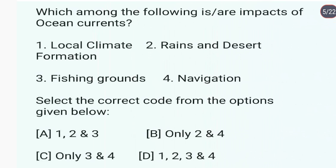Which among the following is an impact of ocean currents? Ocean currents ka impact — local climate, rain and desert formation, fishing grounds, and navigation — ye charon sahi hain. So the answer is D. Ocean currents are large masses of surface water that circulate in regular patterns around the oceans.